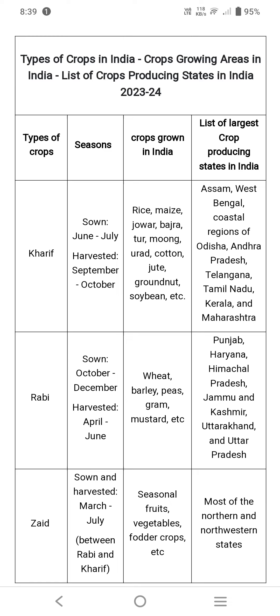Rabi season growing time is October to December. The major crops grown during Rabi season are wheat, barley, peas, gram, and mustard, which are all suitable for the Rabi season.